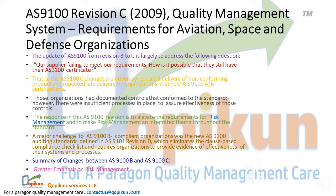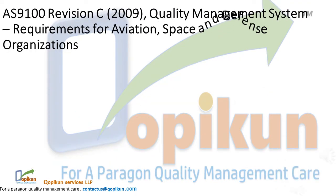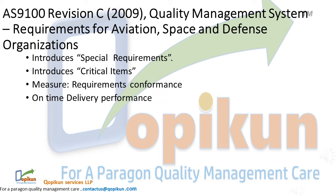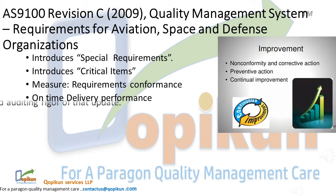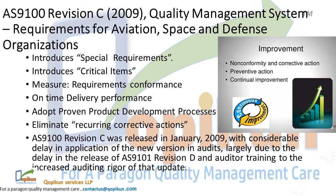Summary of changes between AS9100B and AS9100C: greater emphasis on risk management; introduction of Special Requirements and Critical Items; measurement of requirements conformance; on-time delivery performance; adopting proven product development processes; and eliminating recurring corrective actions. AS9100 Revision C was released in January 2009, with considerable delay in application due to the delayed release of AS9101 Revision D and auditor training to the increased auditing rigor of that update.